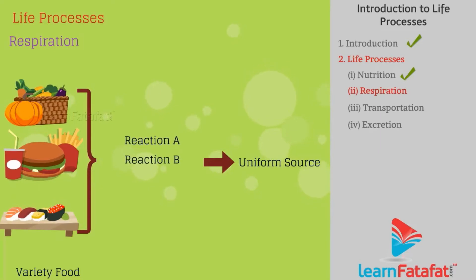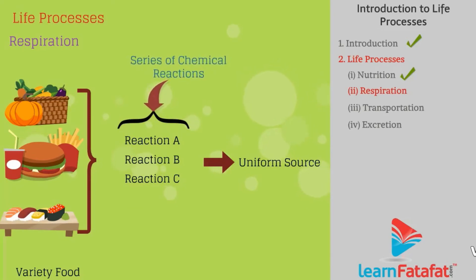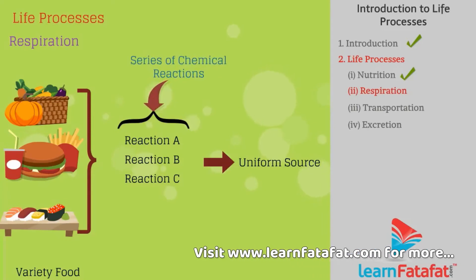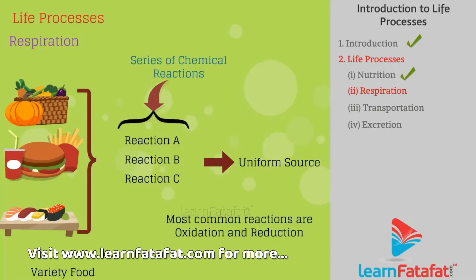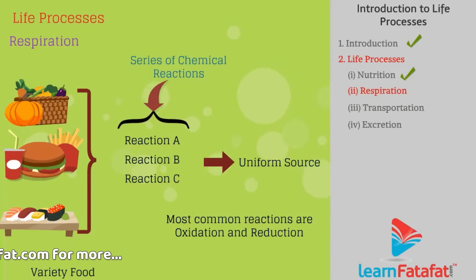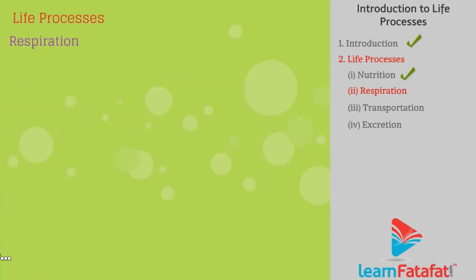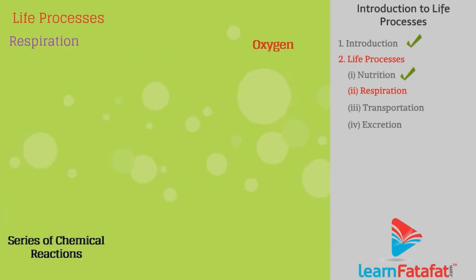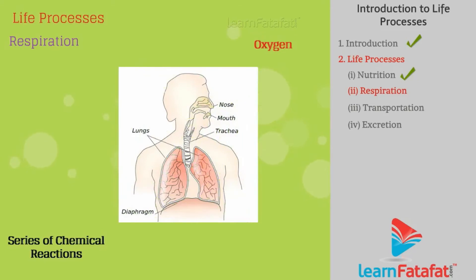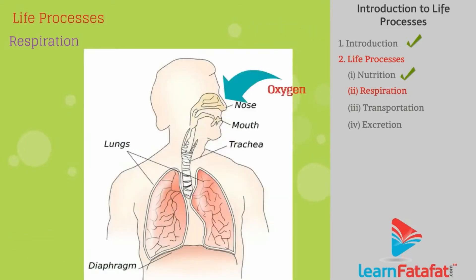For breaking down these sources of energy into a uniform source, a series of chemical reactions is necessary. The most common reactions are oxidation and reduction reactions. These chemical reactions need oxygen that is supplied from outside with the help of respiration. Respiration is the process of obtaining oxygen from outside of the body and using it for production of energy in the body.